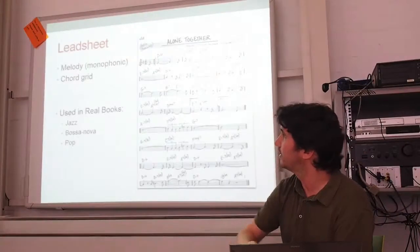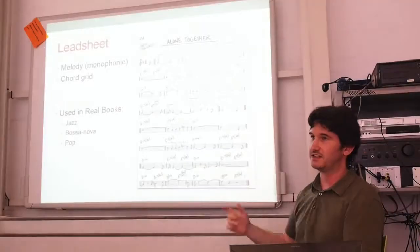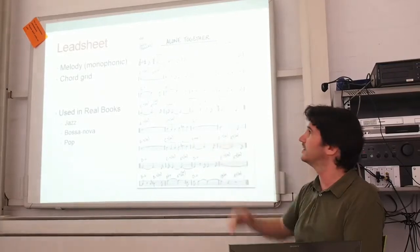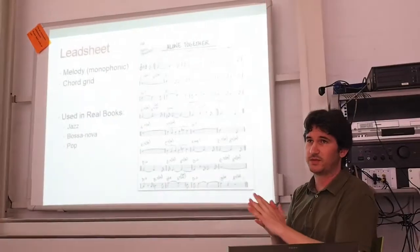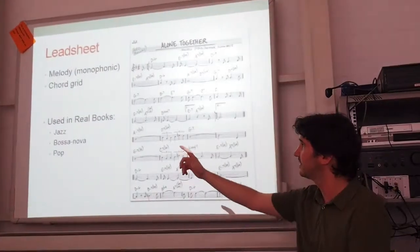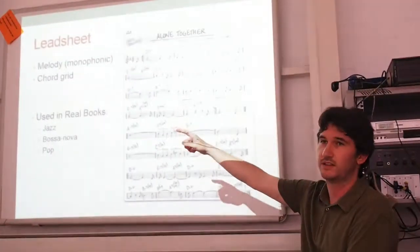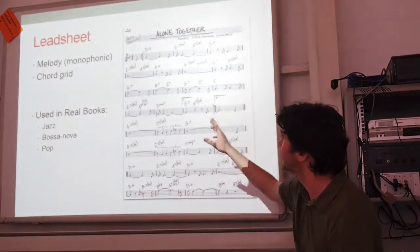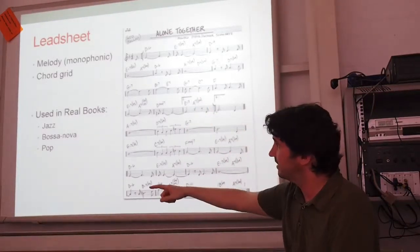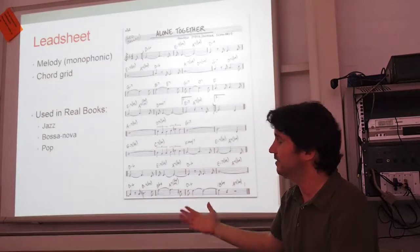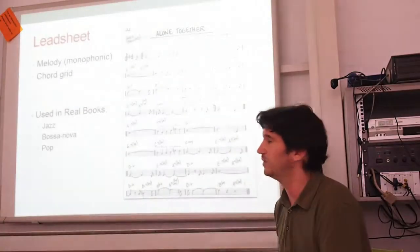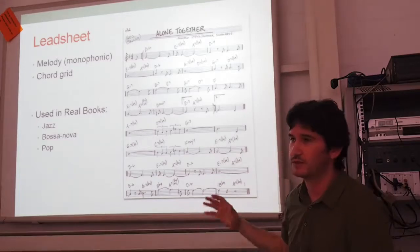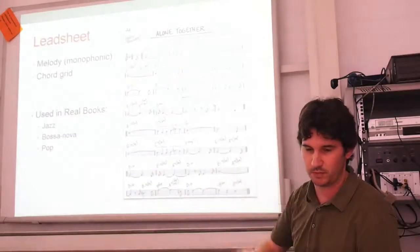So first of all, what is a lead sheet. You can see an example here. It's a type of score which is very simple and it consists of a melody which is most of the times monophonic and a chord grid. And it's very used in the books of jazz, bossa nova and pop. It's one of the most simplest way to represent a popular song.